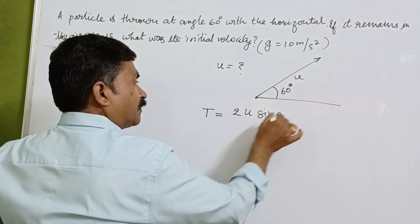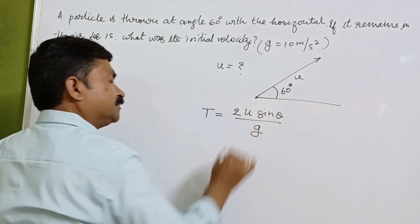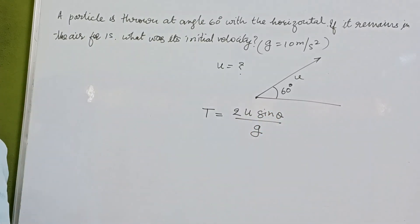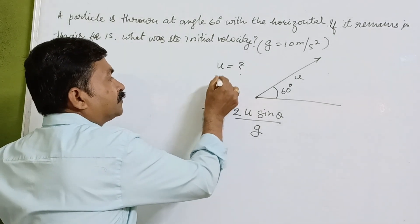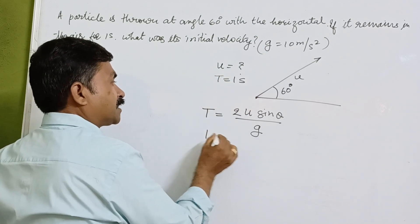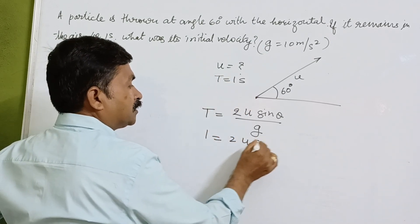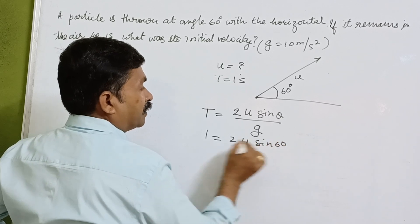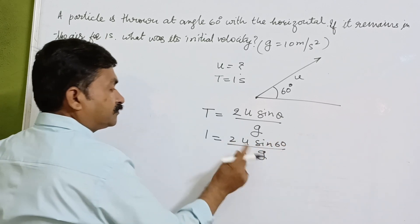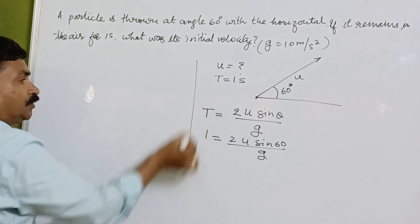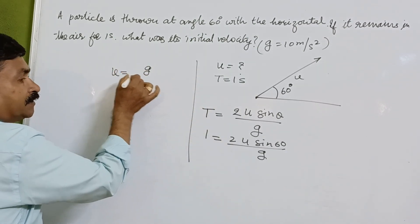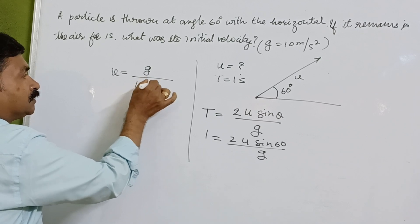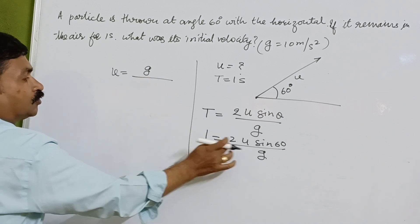Now here, time is given to you, that is one second. So 1 = 2u sin 60 / g. Now u will be equal to g / (2 sin 60).